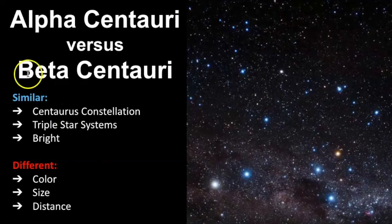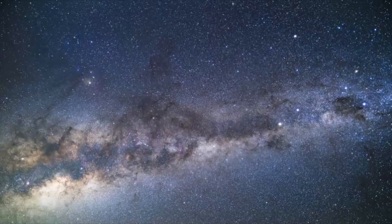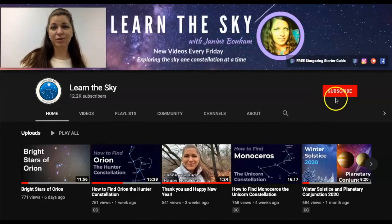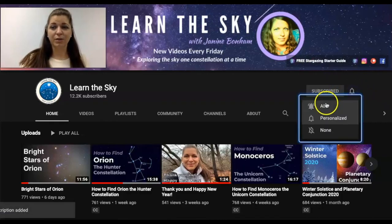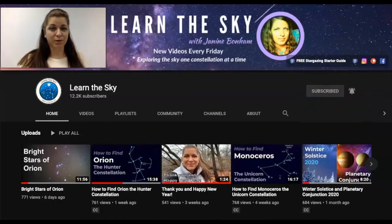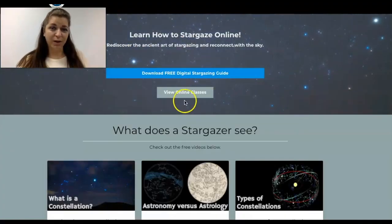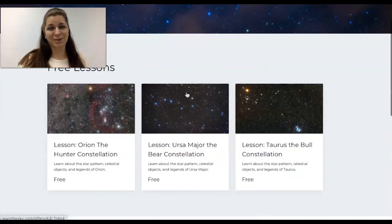To wrap up the similarities: they're both in Centaurus, they're both triple star systems, and they're both very bright in the sky. What's different is their color, their size, and their distance. I hope this video was helpful for understanding the differences between these two stars and how to find them in the sky. Always remember that it takes time, patience, and practice to really understand where everything is in the sky — so be patient with yourself, keep going out, seek out dark skies, and as always keep looking up. If you're new to this channel, click the subscribe button and hit the bell for notifications. Visit my website for free downloads, online lessons, and classes.